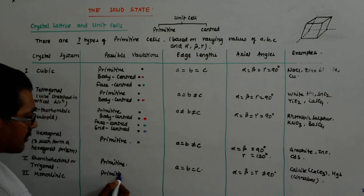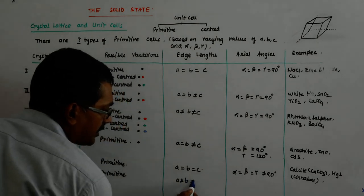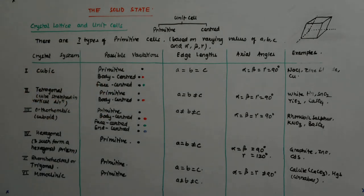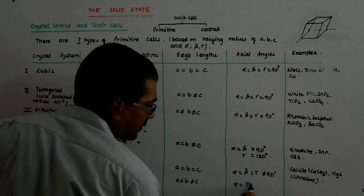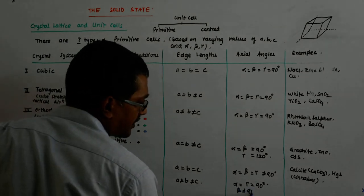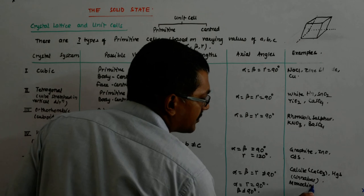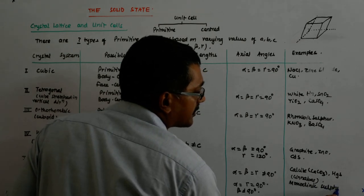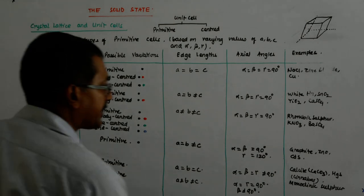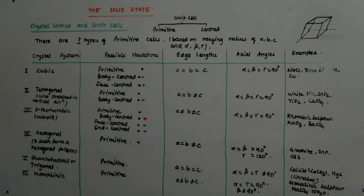Then I come to monoclinic, which is primitive and also end-centered. For monoclinic: a is not equal to b, not equal to c. Alpha equals gamma equals 90 degrees, but beta is not 90 degrees — beta is not 90 degrees. The examples are monoclinic sulfur — remember this because the name itself follows — and sodium sulfate with 10 molecules of water of crystallization: Na₂SO₄·10H₂O.